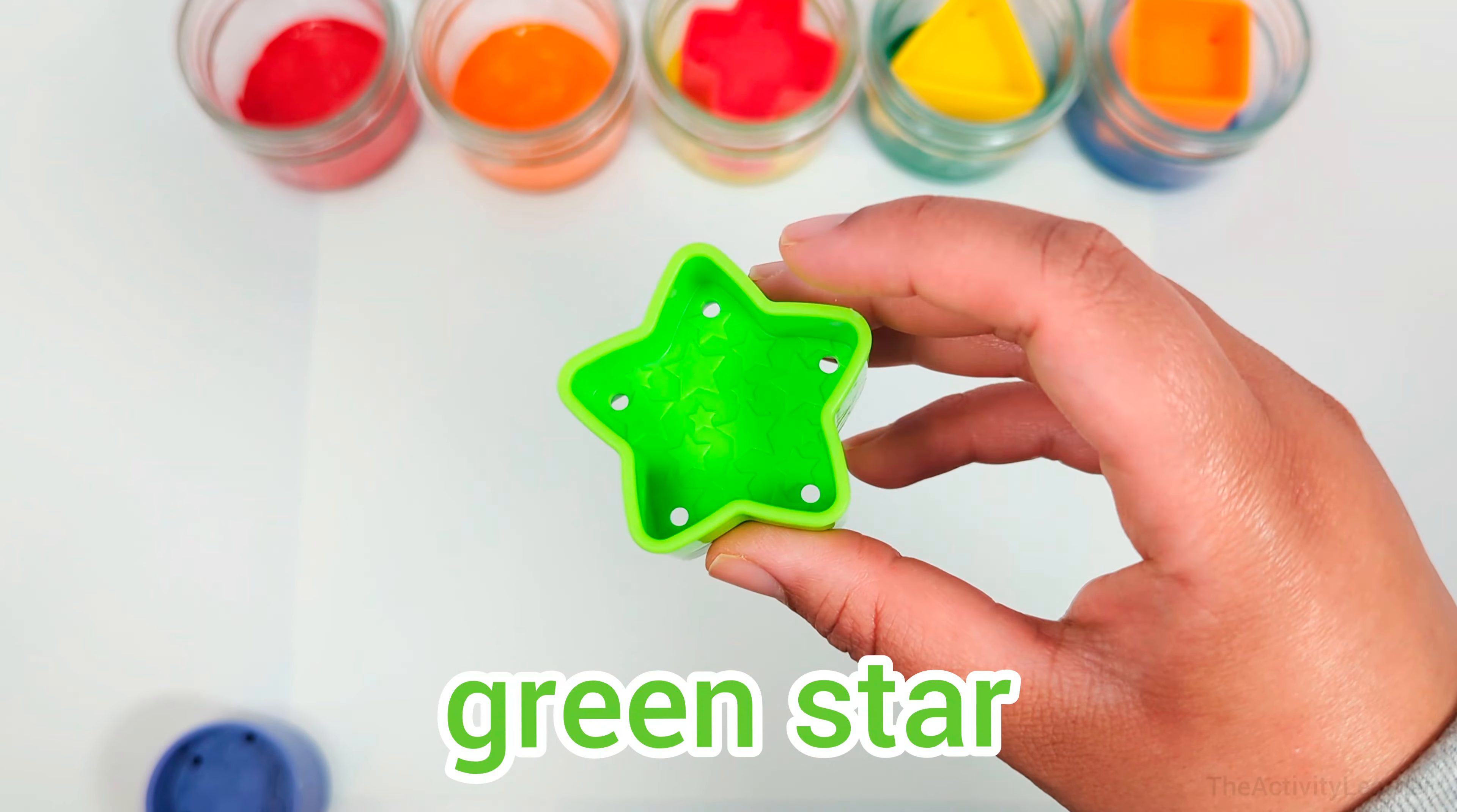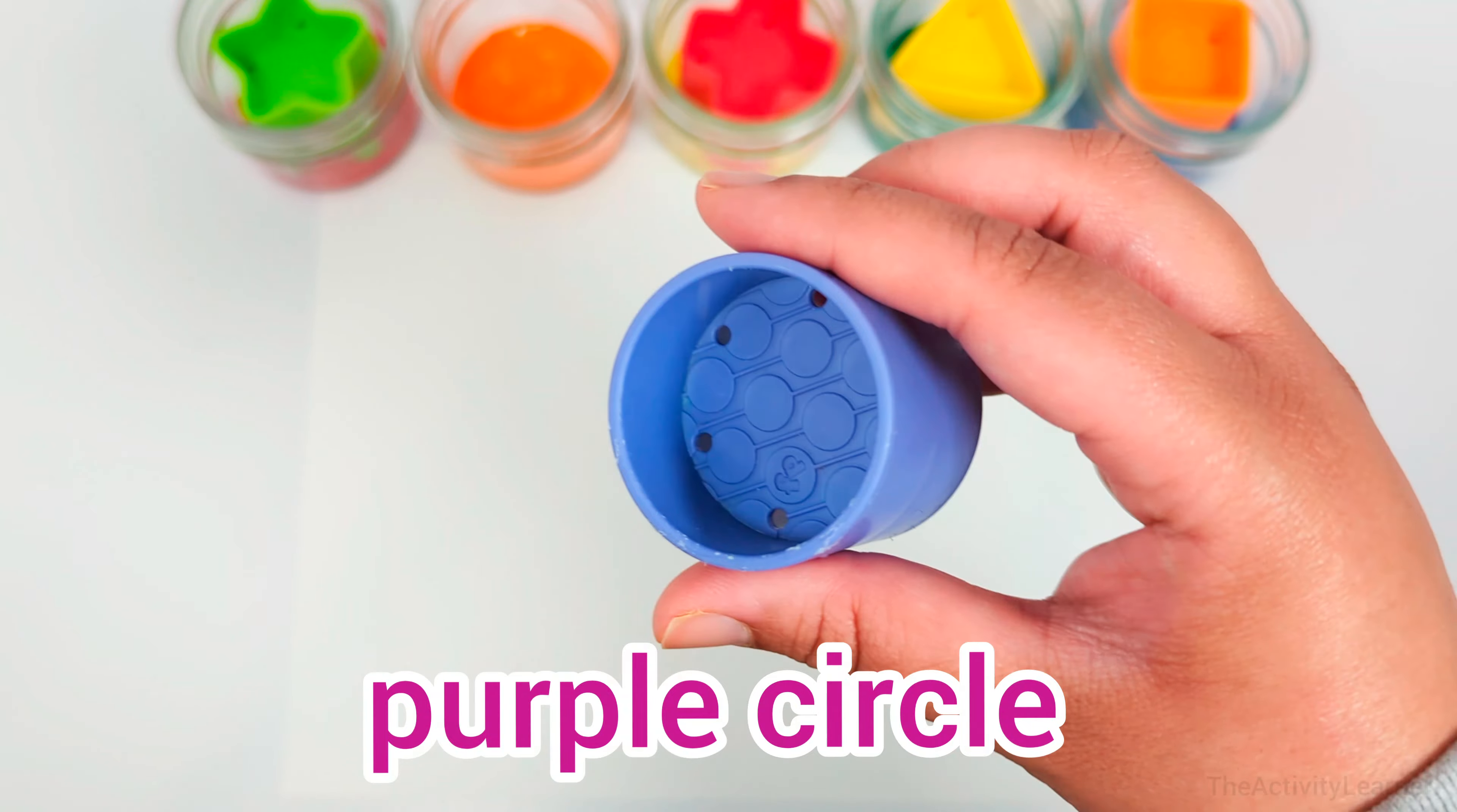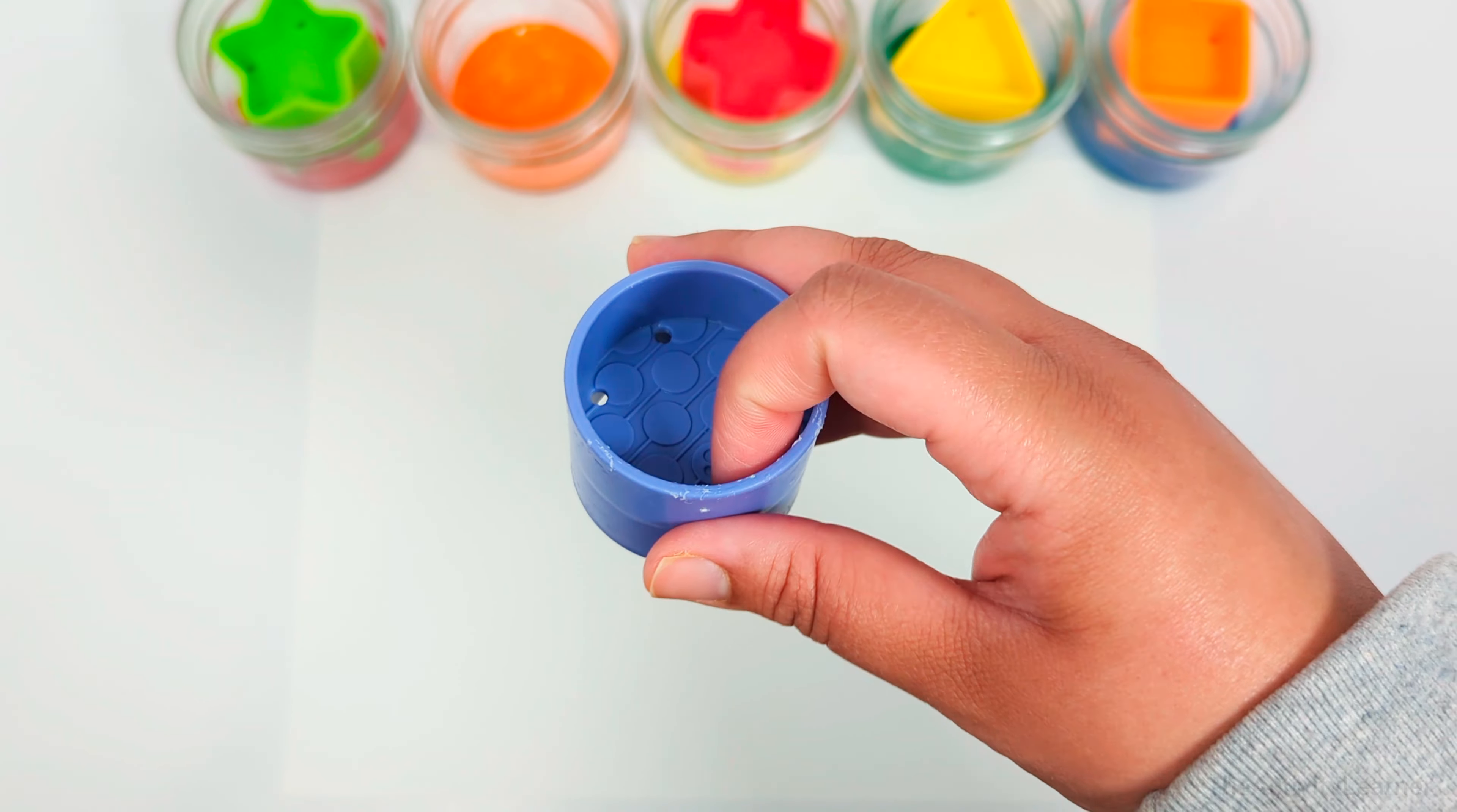Green star, I'm going to put it in the red paint. Purple circle, a circle has no sides. I'm going to put it in the orange paint.